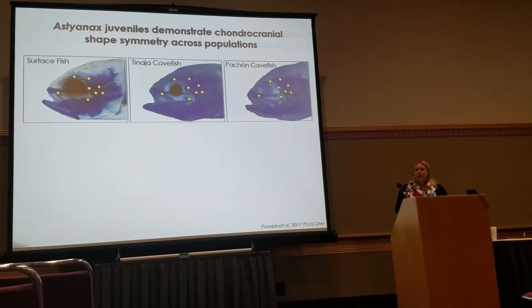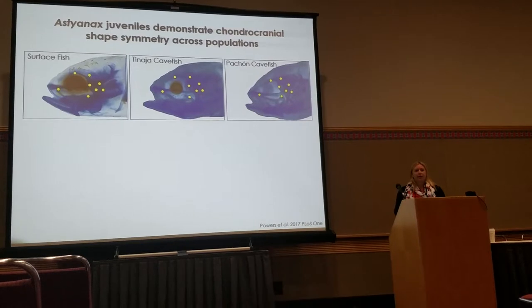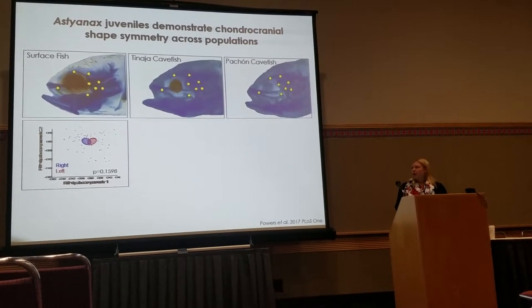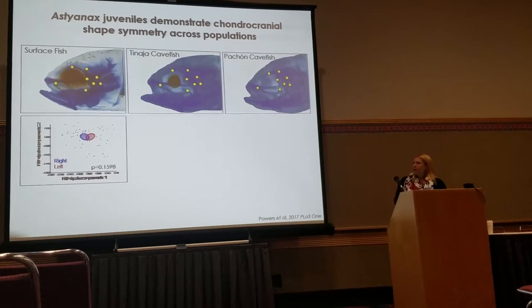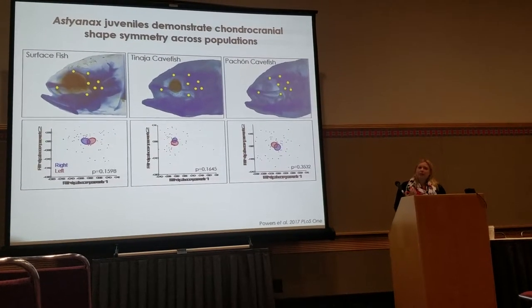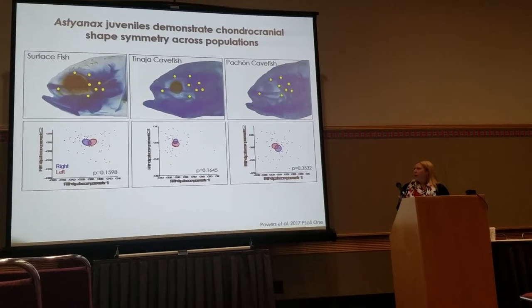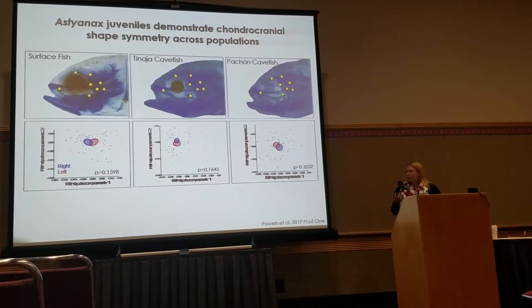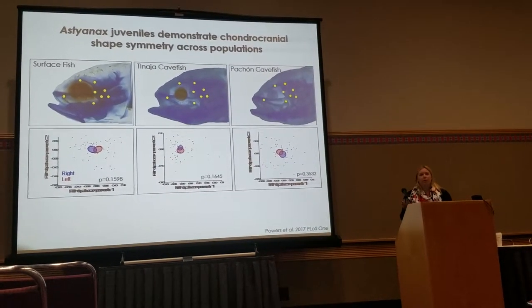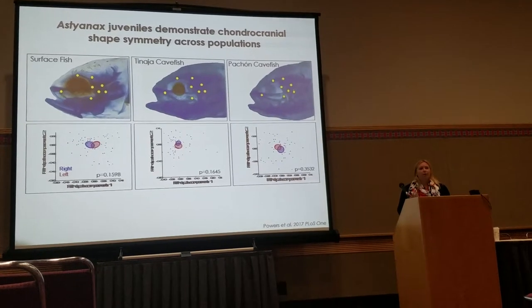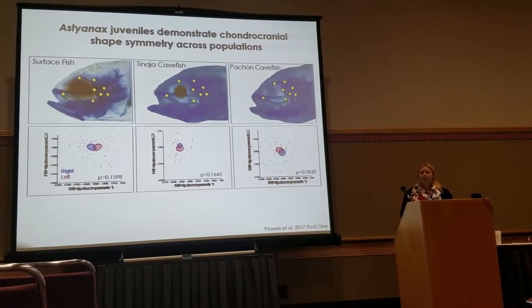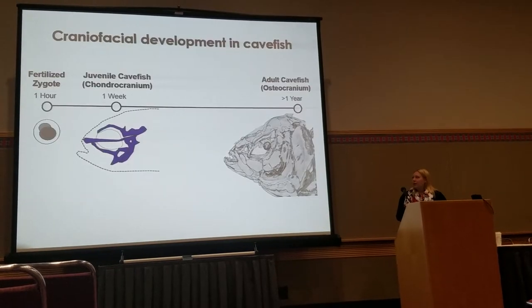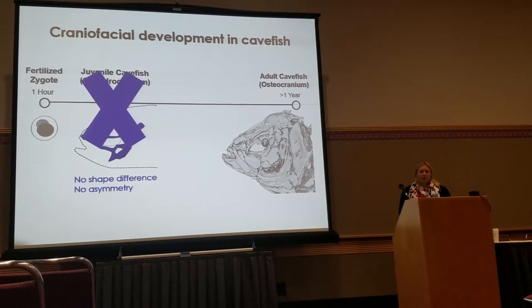We also looked at asymmetry — whether the shape on the right side of the face is the same as the left. For surface fish, the two shapes overlap. Very interestingly, cave fish also have overlapping right and left-sided shapes. This contradicts what we see in adults, where SO3 bone fragmentation is asymmetrical. Very early on in development, we're not seeing any evidence of shape difference or asymmetry.